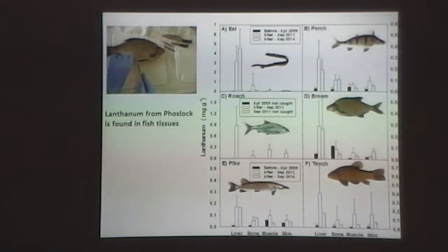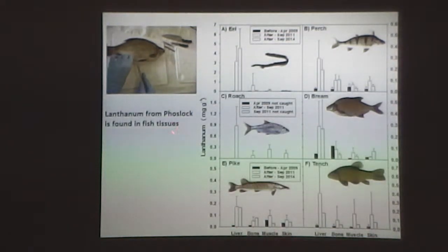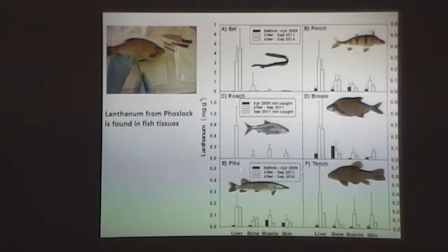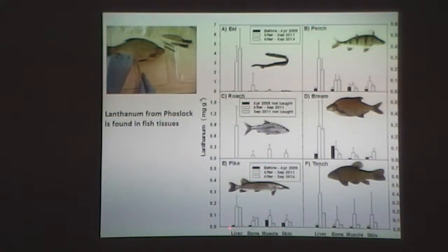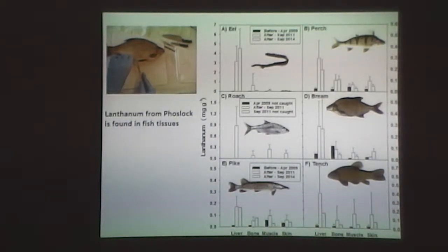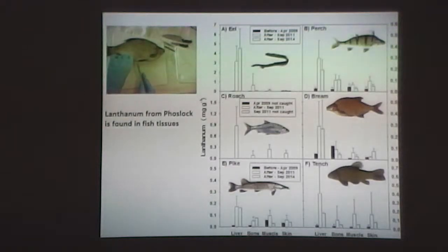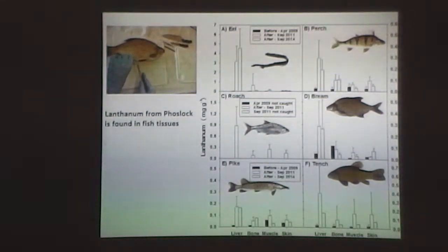Of course, it's an experiment and we want to know everything about what we introduced — especially the lanthanum. We found lanthanum concentrations in different tissues: liver, bone, muscle, and skin of fish. In black it's before application, in white and grey it's after. In most tissues we see that lanthanum concentrations are higher. This means that lanthanum does go into the fish. The company claims it's not bioavailable — well, it is. It is going into the fish. That's for sure, that's what our measurements show. Not high concentrations, and no sign of any toxicity.